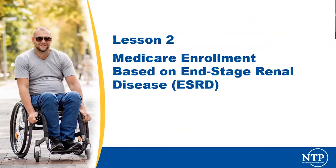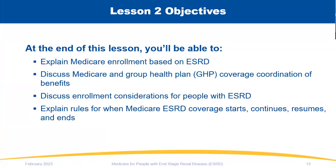Now we're going to move on to Lesson 2 — what the Medicare enrollment process looks like for patients diagnosed with end-stage renal disease. We're going to explain what the Medicare enrollment process is, how it is different for ESRD patients, how Medicare coordinates coverage with group health plans, other enrollment considerations specific to people with ESRD, and the rules for when Medicare ESRD coverage starts, continues, can resume, and when it ends. This is probably the meat of our presentation, so if you have questions beyond today, look at the training materials in the chat.